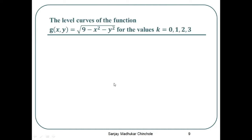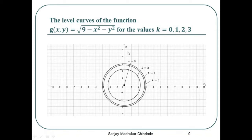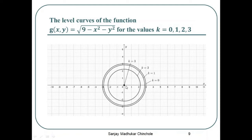For k = 0, the level curve is x² + y² = 9, which is a circle with center (0, 0) and radius 3. For k = 1, the level curve is x² + y² = 8, a circle with radius √8. For k = 2, the level curve is x² + y² = 5, a circle with radius √5. For k = 3, the level curve is x² + y² = 0, which is just the origin (0, 0).